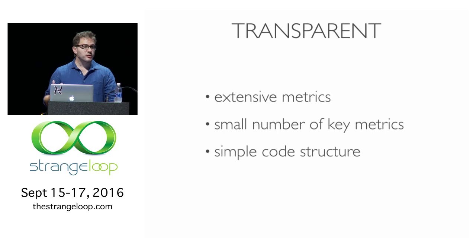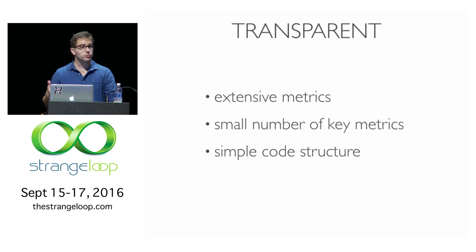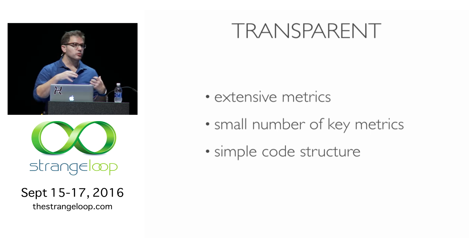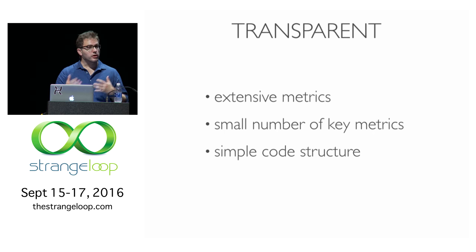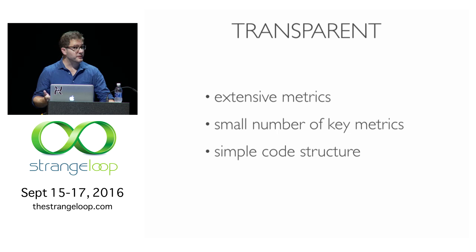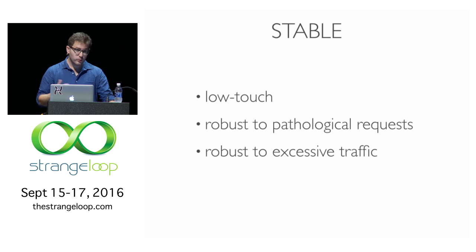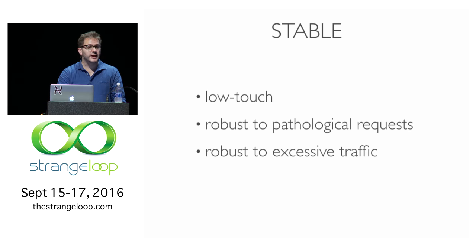By transparent, I mean we can see what's going on inside of it while it's running in production. That means we need to have a lot of metrics, but also a small number of metrics that we pay attention to regularly. It also needs to have a structure that allows us to map the code onto those metrics — if something is going wrong, we need to look at the code and build a hypothesis quickly. We want it to be stable: if we deploy it and everything seems okay, that should remain true even if we look away for a bit.